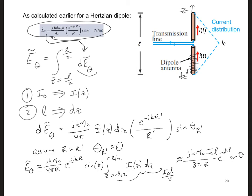How does this compare with what we got for a Hertzian dipole? The radiated far electric field for the short dipole with a triangular current function is the same as that for a Hertzian dipole. The only difference is a different amplitude: we have an 8 here instead of a 4.